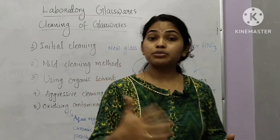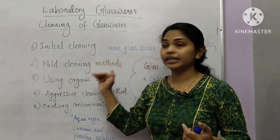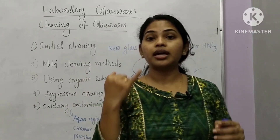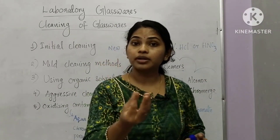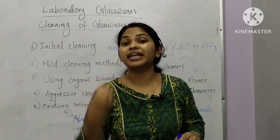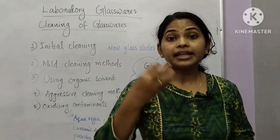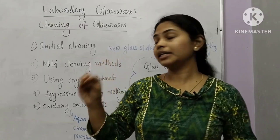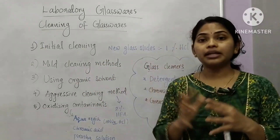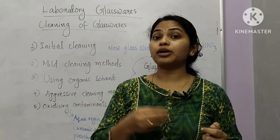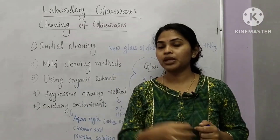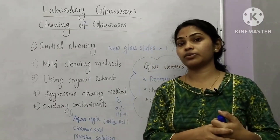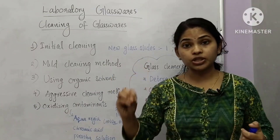Mild cleaning agents include saccharides, hydrolyzing enzymes, and peptides. The mild cleaning method uses deionized water and a small amount of concentrated acid through a few different solvents. We also use organic solvents as part of mild cleaning.